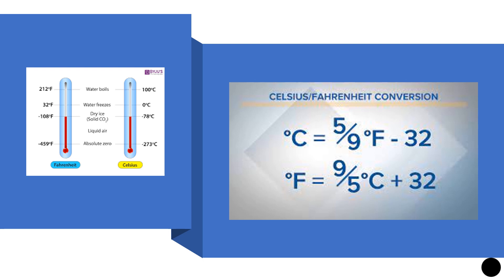An attitude towards an issue measured on a Thurstone scale is also an example of an interval scale — so interval scales can indeed measure attitudes. An ordinal scale can also measure attitude using something like a Likert attitudinal scale. The Likert scale does not measure the absolute intensity of an attitude, but will simply measure it in relation to another person.